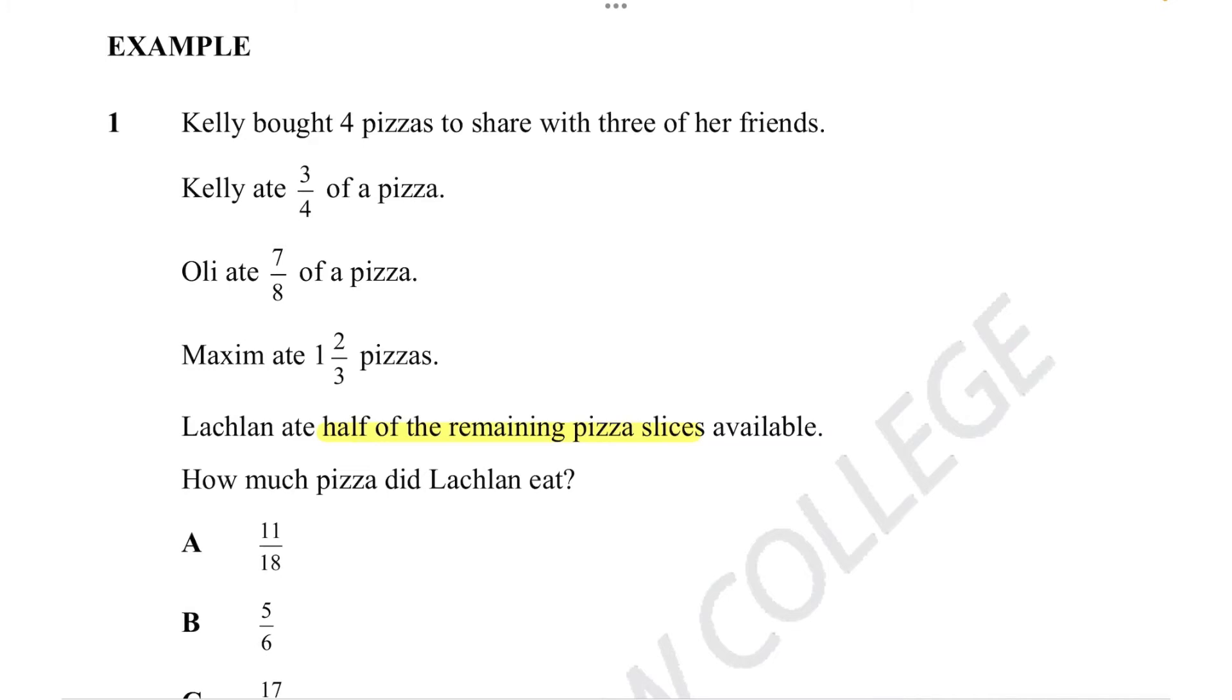Okay, so that means we need to figure out the remaining amount of pizza to figure out the amount of pizza that Lachlan has eaten. So if we have 4 pizzas, since each of these people have eaten part of a pizza, we can figure out how much is left over. If Kelly has eaten three quarters of one whole pizza, then the remainder is just going to be 4 over 4 minus 3 over 4. Remembering that you can only do subtraction when the denominator is the same. This gives us one quarter of a pizza left.